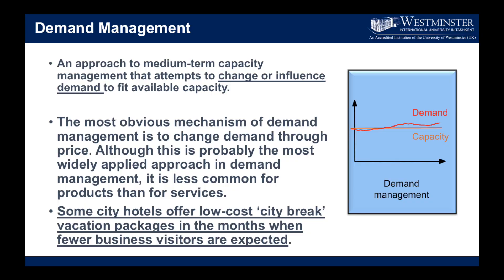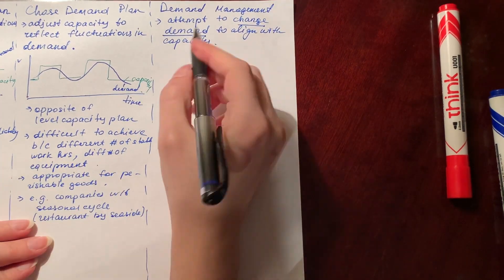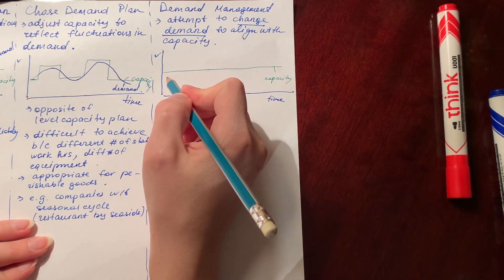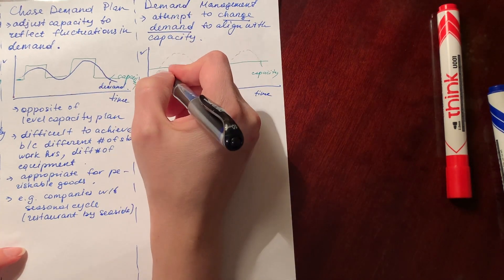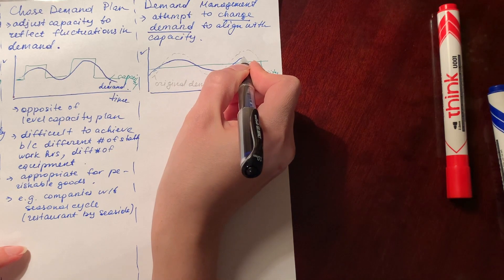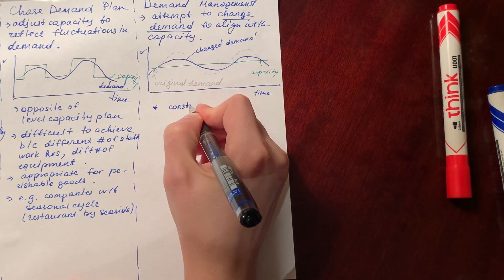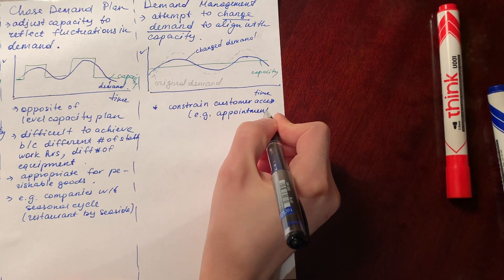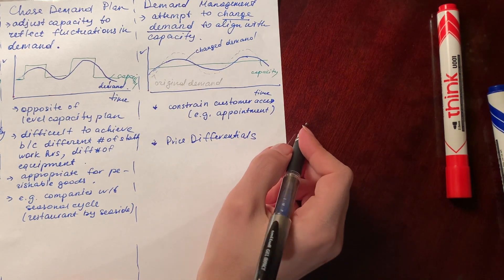Our alternative third strategy to discuss in this session is demand management. Demand management tells us to change or influence the demand to fit available capacity. In the graph, the green line shows our capacity, the pencil line shows the original demand that fluctuates, and our aim is to change the demand. If our attempt is successful, we get a new demand curve shown in blue ink. There are four ways to do that. The first is to constrain customer access — for example, schedule appointments to manage demand.